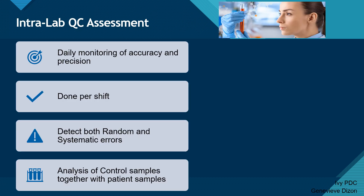The first one is intra-lab QC. Intra-lab is within the laboratory quality control, so these are the things done by the medical technologists in the laboratory. Intra-lab involves the daily monitoring of accuracy and precision. We monitor accuracy by testing control materials, and this is done per shift.